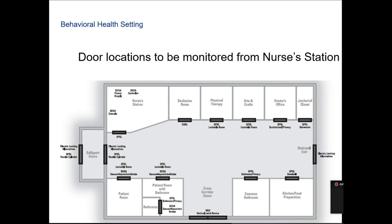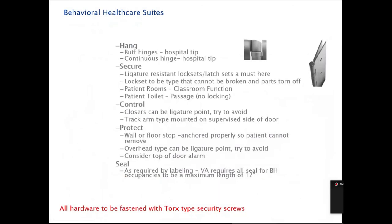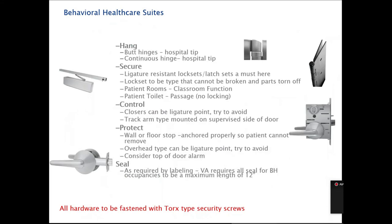Behavioral healthcare suites have some very important differences. The conal device — where the rose is shaped like a cone — is key, along with more hospital tips. Most of the time, door closers are installed on the patient room side, but with a behavioral health room, you're not going to want to do that because a closer on the inside creates a spot where someone can hang rope, bedcloth, or similar items. So most of those rooms will have either a concealed closer or a closer mounted on the opposite, supervised side.